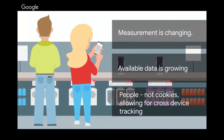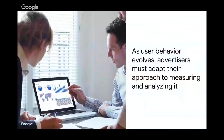It's important to note that we track people, not cookies, in order to understand the customer journey. We have access to and build a profile of our customer based on thousands and thousands of new contextual signals. So as this user behavior evolves, it's very important that we measure and adapt our measurement and our way of analyzing this, which is exactly the focus of today's discussion.